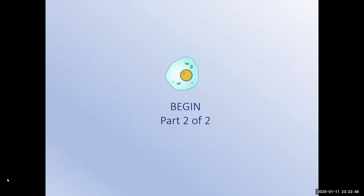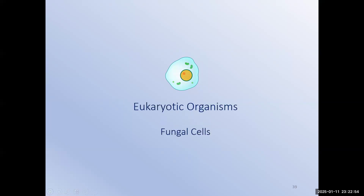All right, so let's finish up Chapter 4, the eukaryotic cells, with Part 2 of 2. Now that we know the basic structure and function of eukaryotic cells, let's take a look at some examples of those cells.